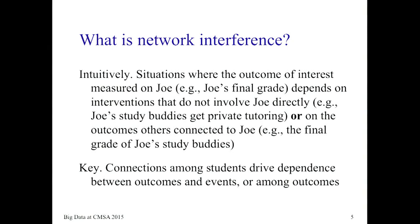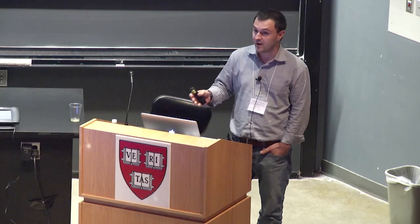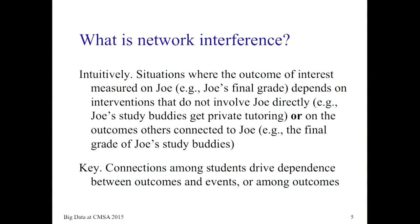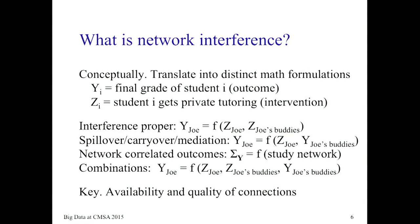Intuitively, there are many situations where an outcome of interest depends on interventions not involving the unit directly. For example, Joe's final grade on a class may depend on whether some of his friends get private tutoring or are doing well on average. The connections among students drive the dependence between outcomes and events. That's how people talk about interference in the sciences — your outcome depends on somebody else's outcome or treatment. But formally and statistically, these are very different situations.